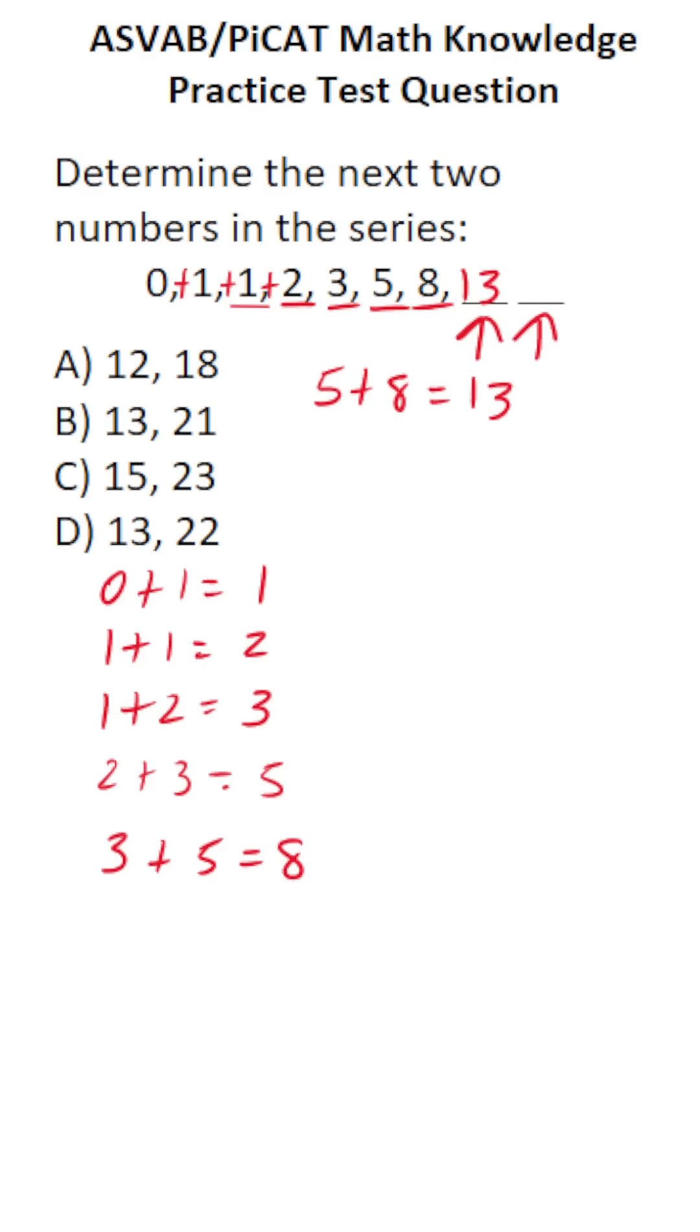And to get to this final missing number, we're going to add the two preceding numbers, notably 8 and 13. 8 plus 13 is 21. So that is that one, and we can see that the answer choice here is going to be B.